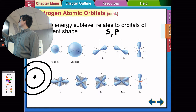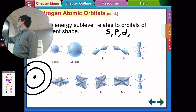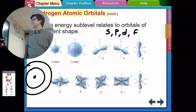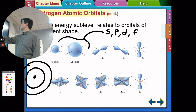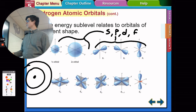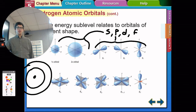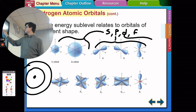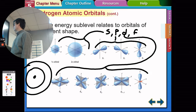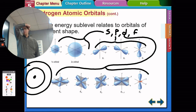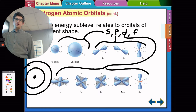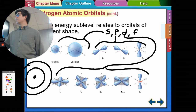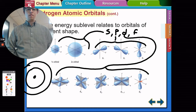So: s, p, d, and f. The s orbitals are spheres. The p orbitals are commonly called dumbbell-shaped. The d orbitals are commonly called clover-shaped. The f orbitals are more complicated — basically like double clovers — you can look up images on Google. So as we said, the Bohr model had orbitals that look like orbits, but in real life they are these shapes.